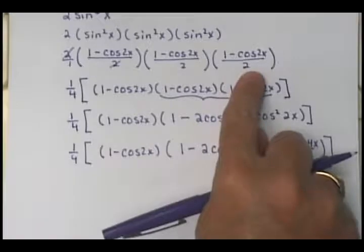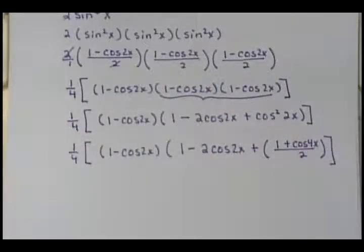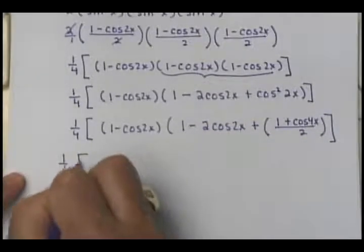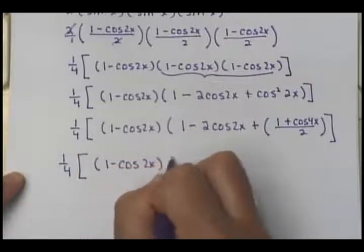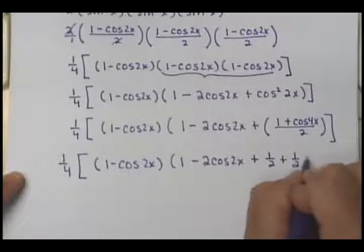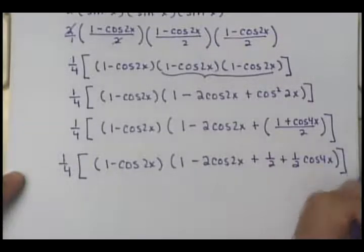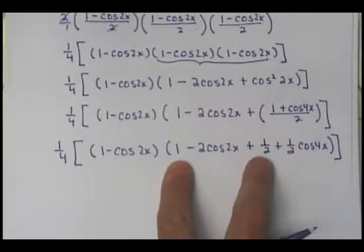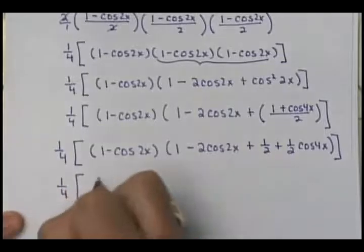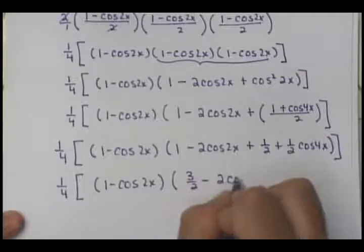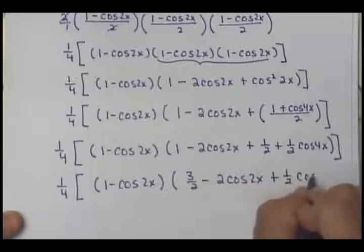When you factor it out you get 1 fourth. So cleaning this up, this is going to be 1 fourth times (1 minus cosine 2x) times (1 minus 2 cosine 2x plus 1 half plus 1 half cosine 4x). Now you can combine that 1 and that 1 half, which gives 3 halves minus 2 cosine 2x plus 1 half cosine 4x.